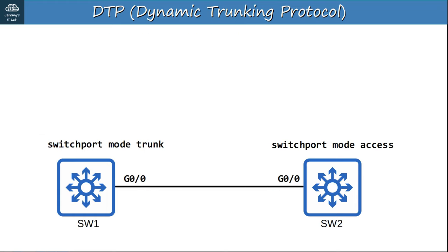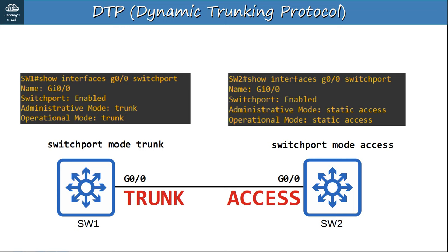If a manually configured trunk is connected to a manually configured access port, since both are manually configured, they are forced to operate mismatched in trunk and access modes. However, this configuration does not work — it should result in an error and traffic will not pass between these switches.